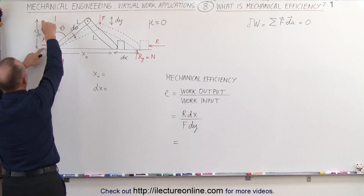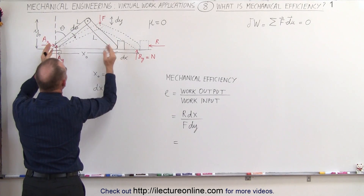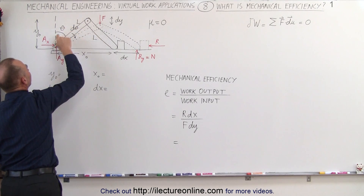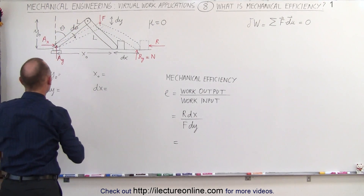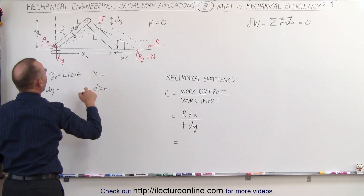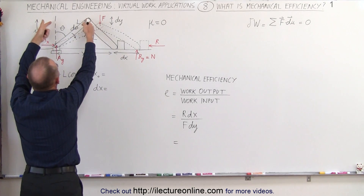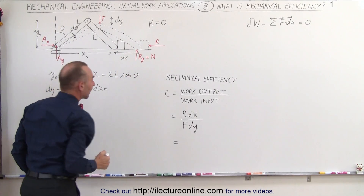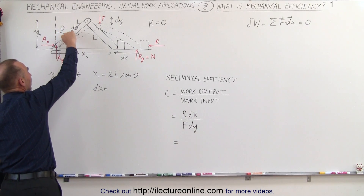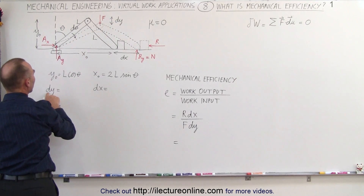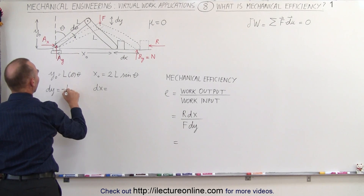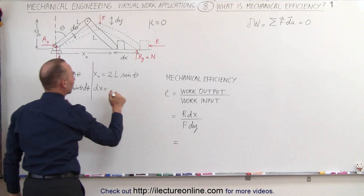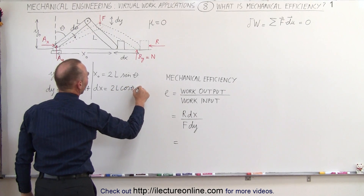We also need to define the initial height here. We start with the initial distance between these two points and then the change in those. The initial distance y is the length of one of these beams, equal to l times the cosine of the angle because it's adjacent to the angle. So this becomes l times cosine of theta, and the horizontal distance is l times the sine of theta, times two because we have two beams, giving us 2l times sine of theta. The angle changes through d theta, giving us dy equal to the differential of l cosine theta, which is minus l times sine of theta times d theta. For dx we take the derivative, which gives 2l times cosine of theta times d theta.